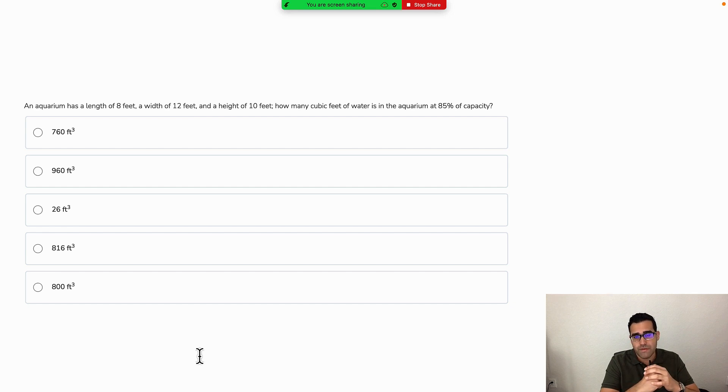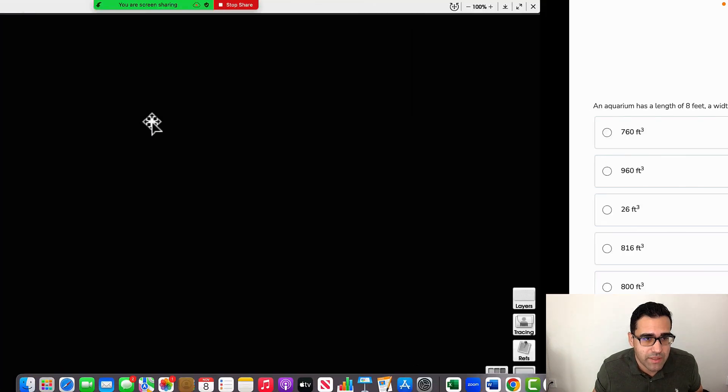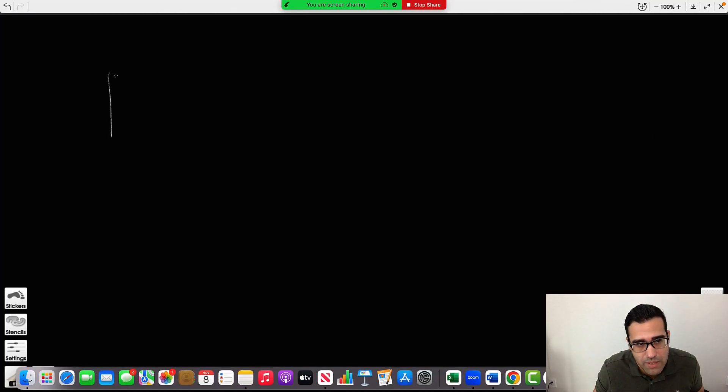So let's talk about it. An aquarium has a length of 8 feet, a width of 12 feet. Let's start writing that down. Because it says aquarium, I like to make a little drawing—the drawing helps me. Anytime I think of an aquarium, I'm thinking it's probably going to be related to volume. Most likely in the ASVAB, it's related to volume.